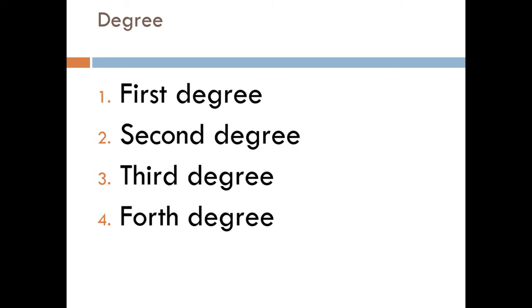What are the degrees of perineal tear? First degree perineal tear includes the posterior vaginal mucosa and the perineal skin. Second degree perineal tear includes the posterior vaginal mucosa, perineal skin, and perineal muscle.